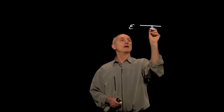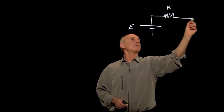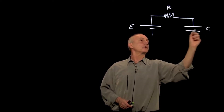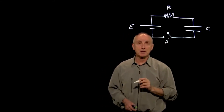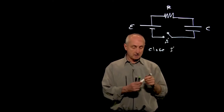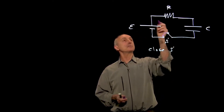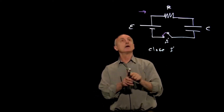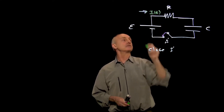We now analyze what happens when we put a capacitor into a circuit. We have a seat of EMF, a resistor, and a capacitor in the circuit, with a switch S. When we close S, the battery starts to put out a current, and we're going to see that this current running through the circuit will be a function of time.